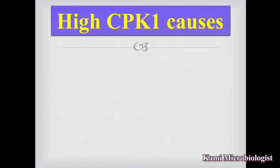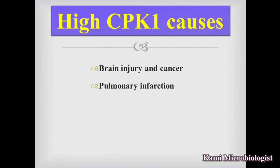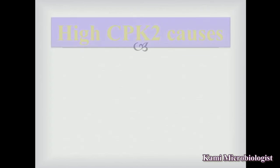Next we have the main causes of high CPK-1. When the CPK-1 level gets high in the blood, it can indicate brain injuries and cancer, pulmonary infarction — which means obstruction or blockage in the pulmonary area, the lungs or trachea — and seizures, which means abnormal electrical activity in the brain.